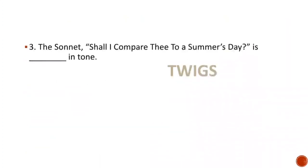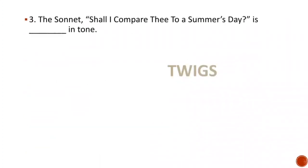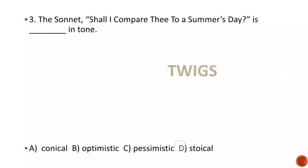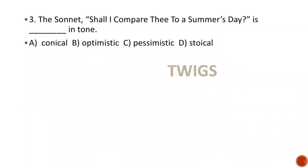Next MCQ: The sonnet 'Shall I Compare Thee to a Summer's Day' is dash in tone — options are comical, optimistic, pessimistic, struggle. We know that the sonnet is optimistic in tone. Hence the right answer is option B.